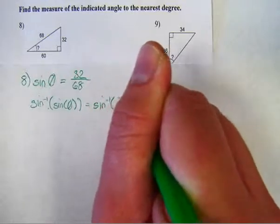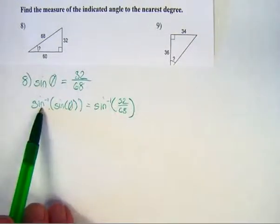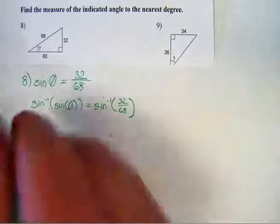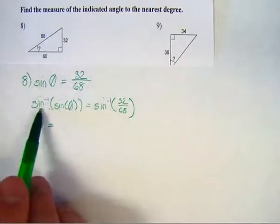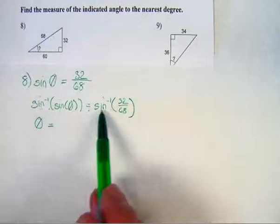So when I take the inverse sine of the sine of theta, I'm left with just theta, because these two undo each other. And over here, I simply need to make the calculation where I'm taking the inverse sine of 32 divided by 68.